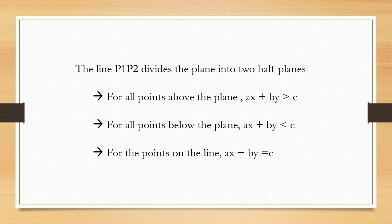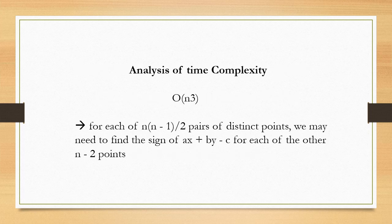The line through P1 and P2 divides the plane into two half-planes. For all points above the line: ax + by > c. For all points below the line: ax + by < c. For all points on the line: ax + by = c.